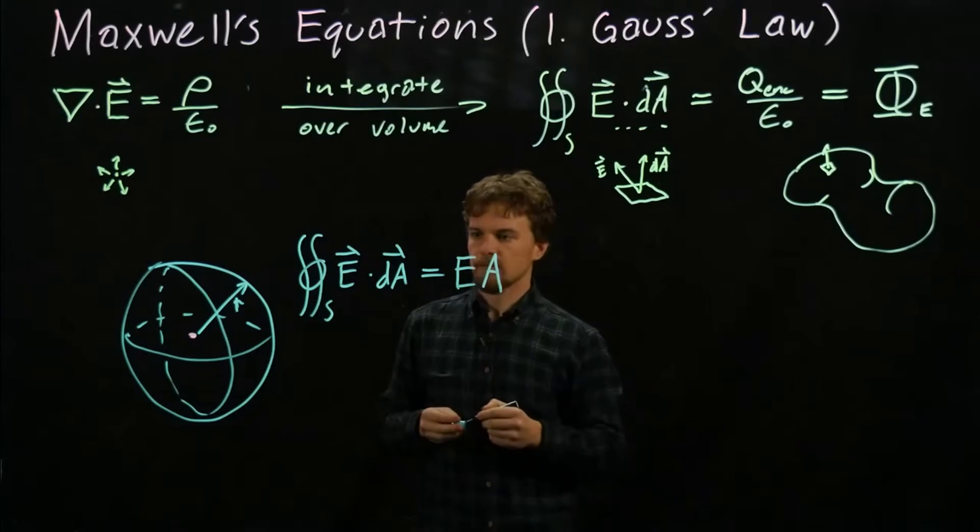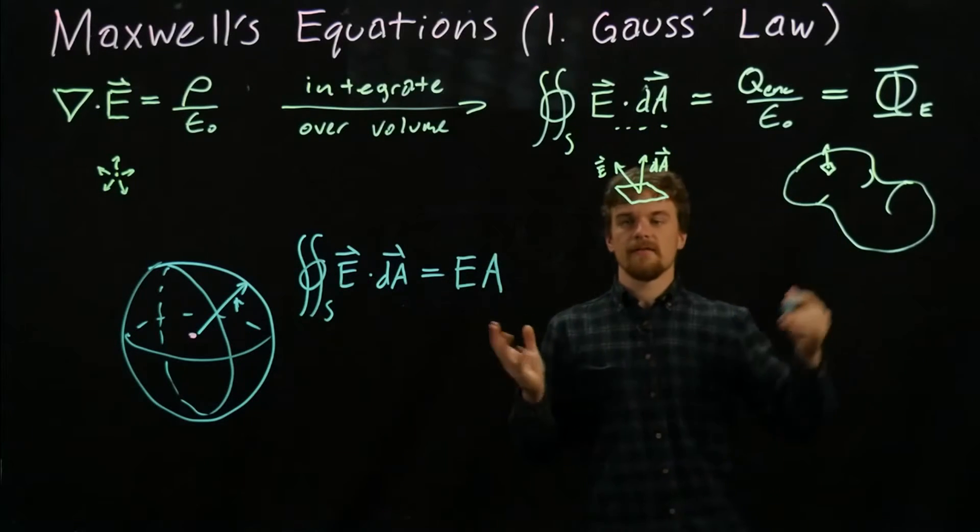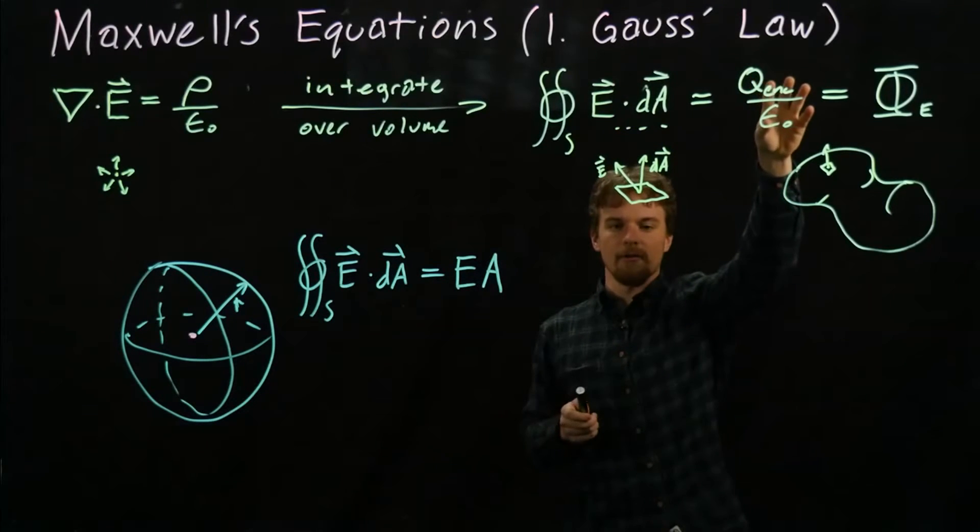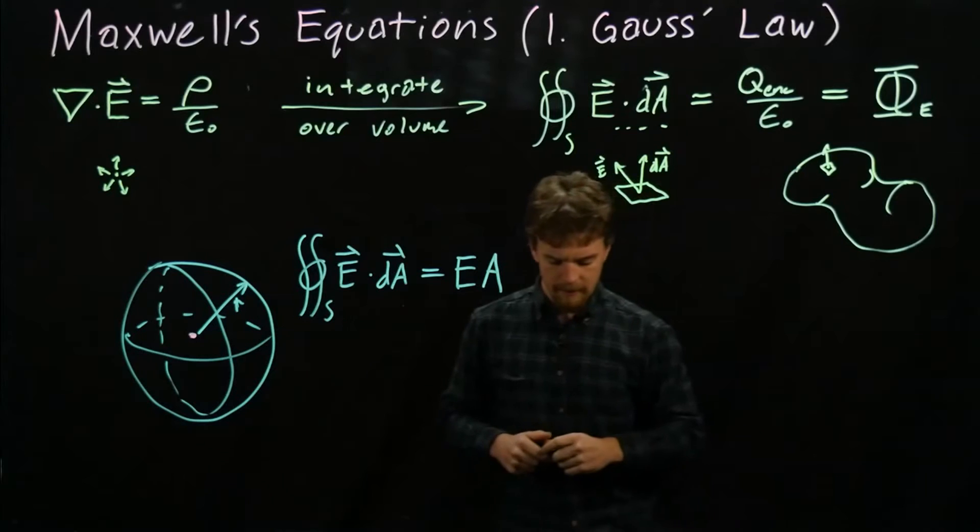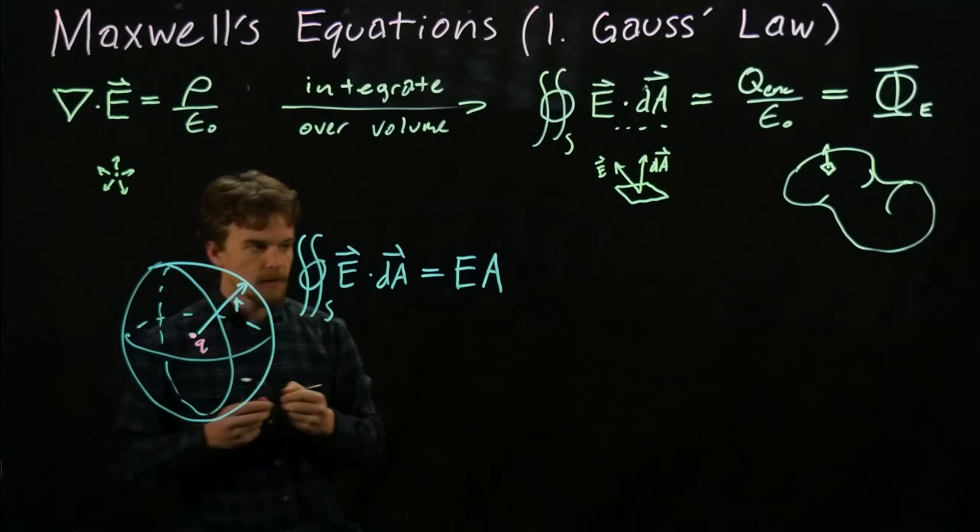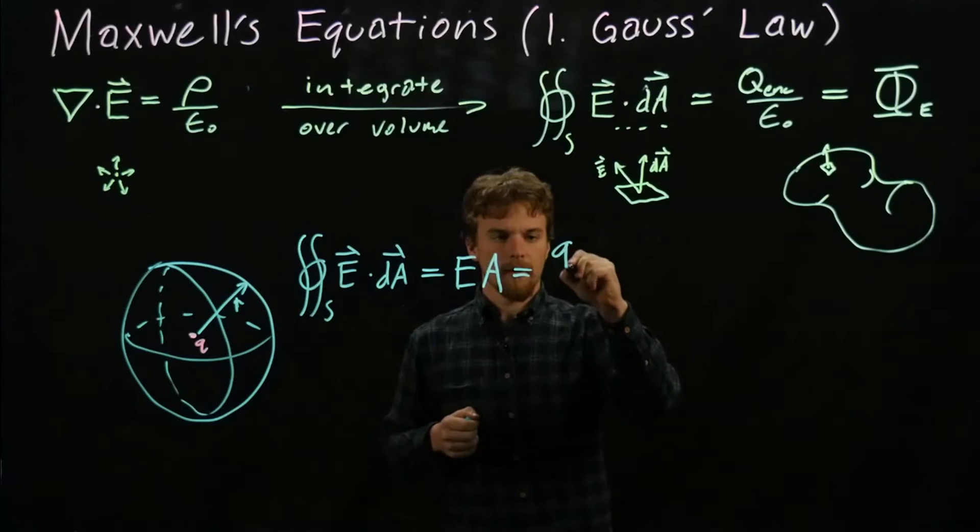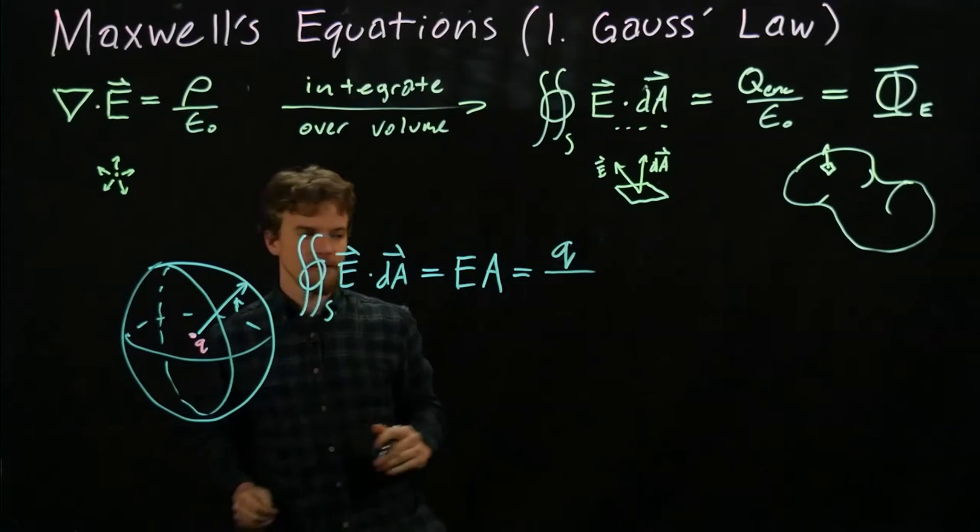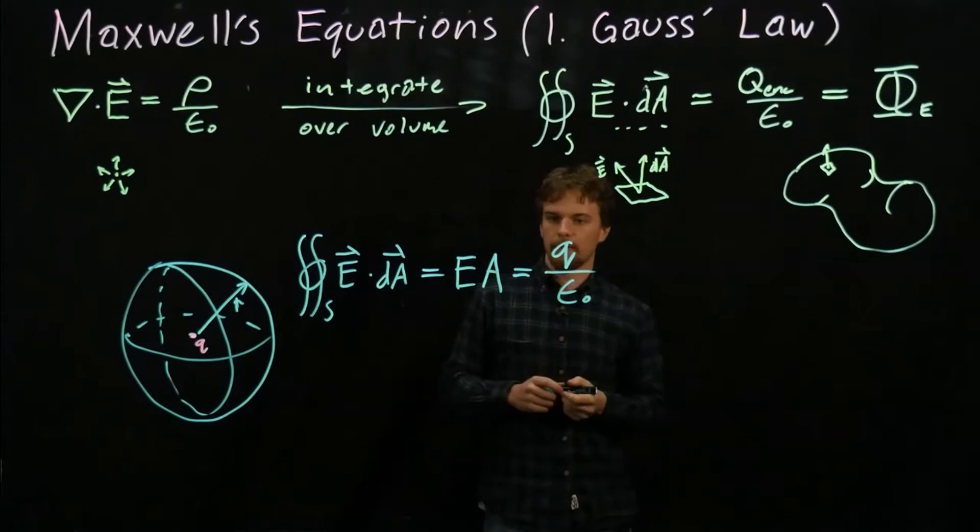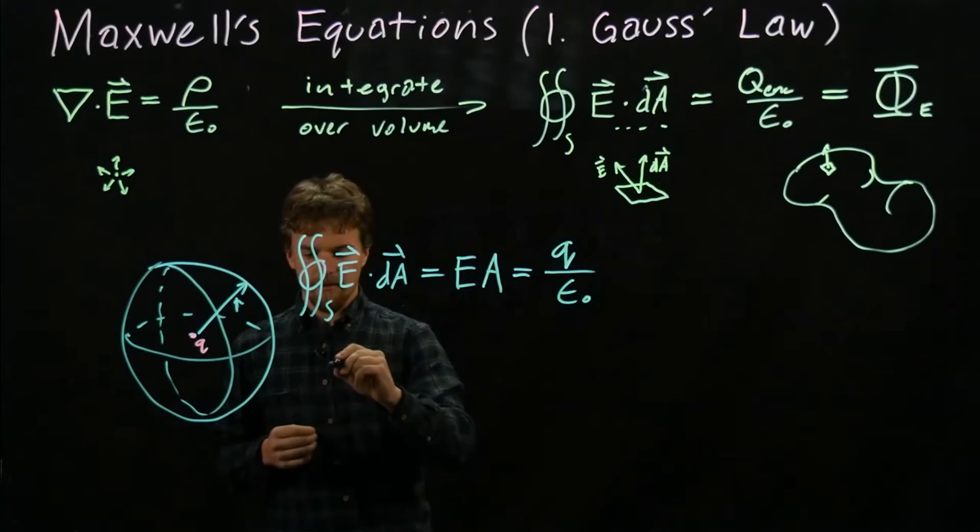What does Gauss's law say? For any arbitrary surface, this integral is equal to the q_enclosed by the surface over ε₀. This little pink dot here is a point charge q, so we set this equal to our point charge q, which is the only charge enclosed by the sphere, over ε₀.